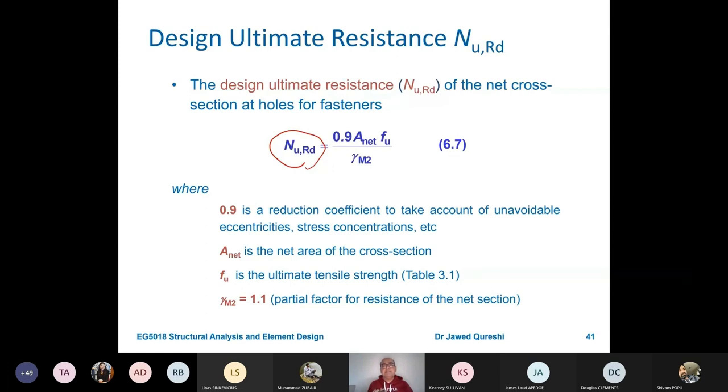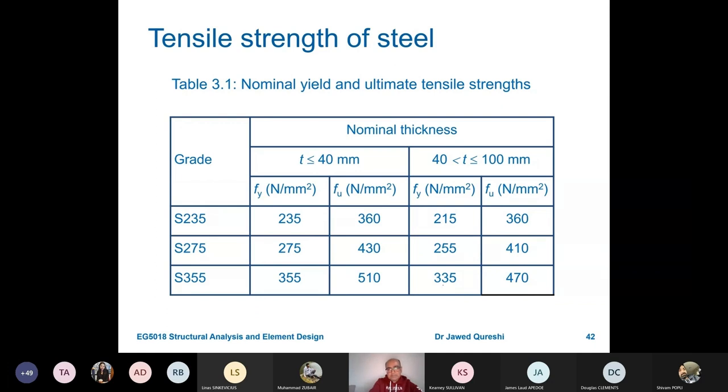And then we have this formula where we use ultimate tensile strength. Now 0.9 is a factor to account for eccentricities and stress concentrations. Anet is the net area. Now what does it mean by net area? Net area means taking into account holes. Obviously these bracings need to be connected. Fu is ultimate tensile strength, which we get from Table 3.1. Gamma M2 is a factor which is 1.1. From this table for different steel grades, we get Fy and we get Fu. So we always have to refer to this table. Most steel sections are less than 40 millimeters, so you don't have to worry about it.